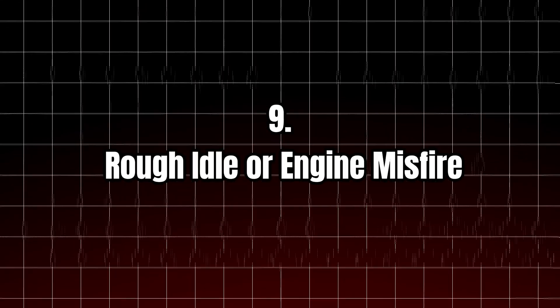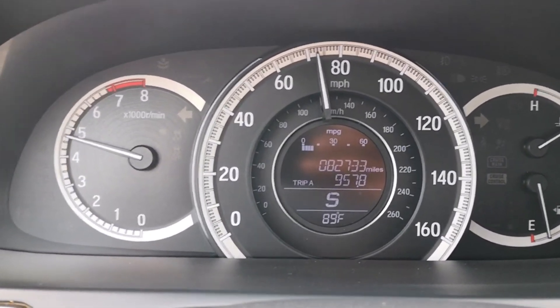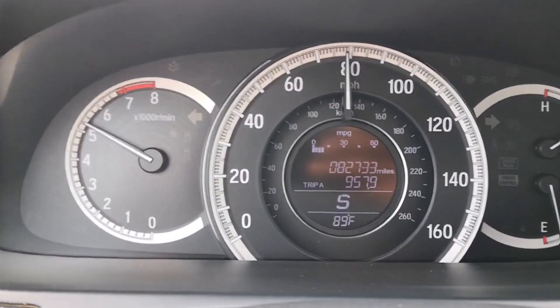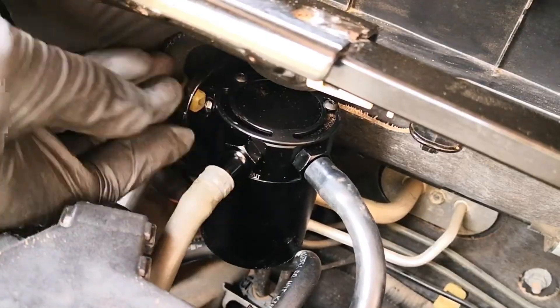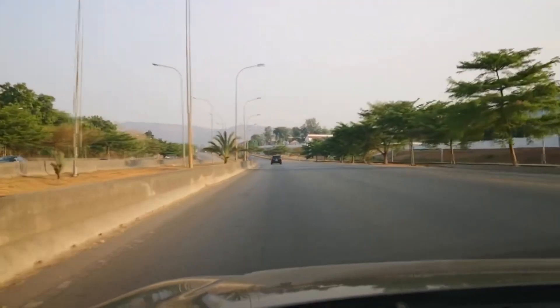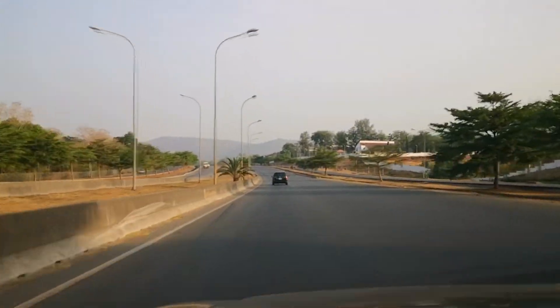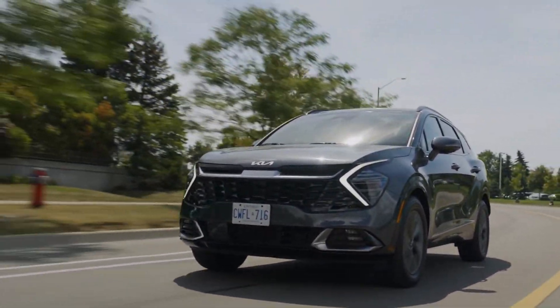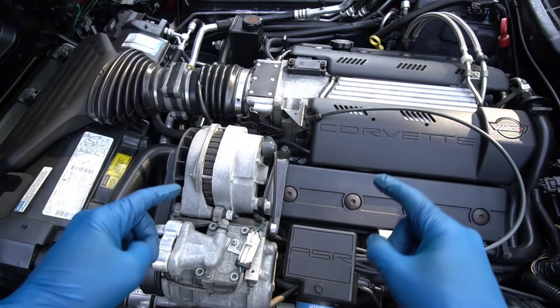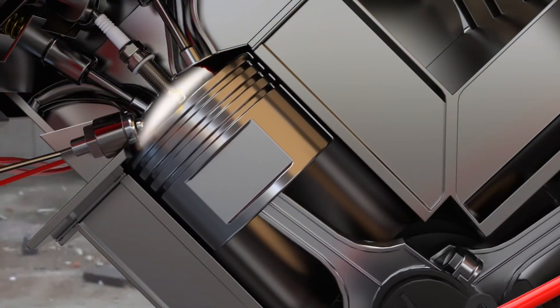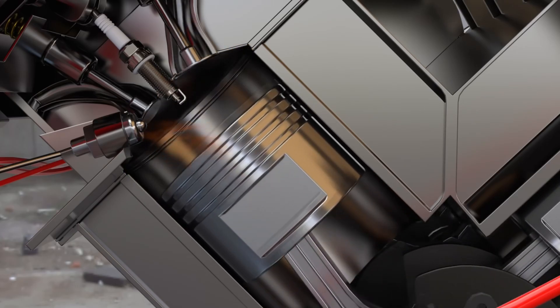Another common symptom of carbon buildup is a rough idle or engine misfire. If your car is idling unevenly, shaking, or hesitating when you accelerate, carbon deposits could be the cause. Carbon buildup on the intake valves or combustion chambers can cause irregular combustion, leading to misfires or an unstable idle — disrupting the ignition process. You may notice the engine stuttering or jerking as you drive, especially when starting the car or idling at a stoplight. Ignoring these symptoms can lead to damaged spark plugs or decreased engine efficiency, so it's important to address the carbon buildup as soon as possible.